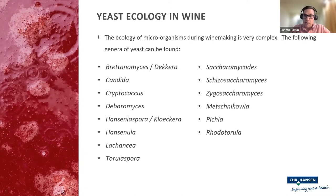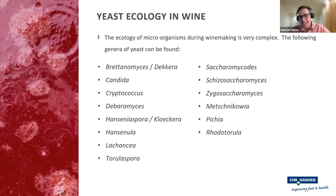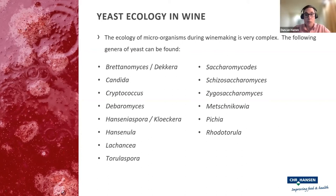We have Lachancea, which is a species that has been commercialized — our company has two Lachancea thermotolerans strains. We have Torulaspora — we also have one of those. And then we see things like Saccharomycodes. There's actually a strain sold from a German research institute of Saccharomycodes for non-alcoholic beer. We also have Schizosaccharomyces, Zygosaccharomyces, Metschnikowia — we see some commercial Metschnikowia strains — Pichia, we have a Pichia kluyveri, and also Rhodotorula. That's quite a broad range of species.